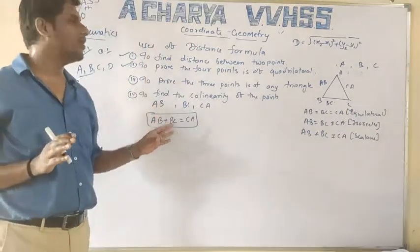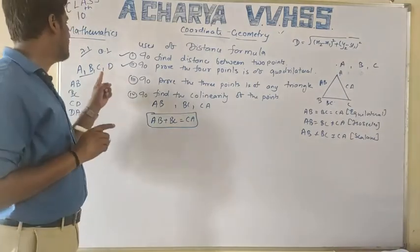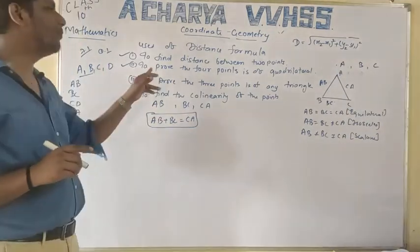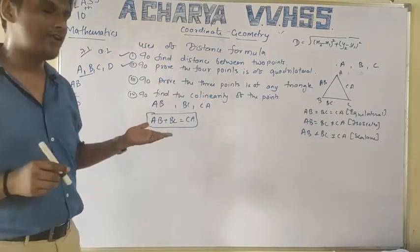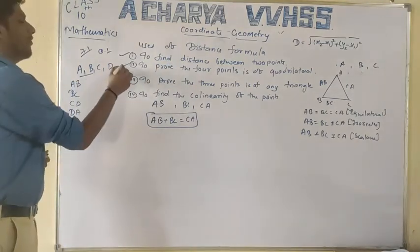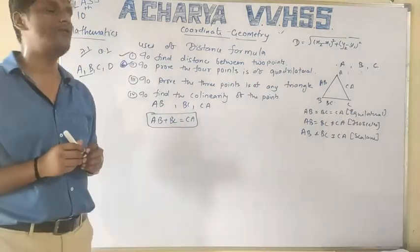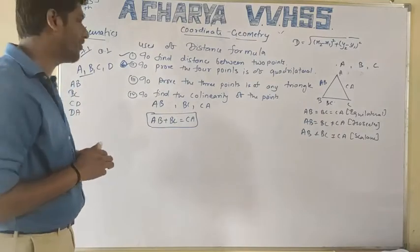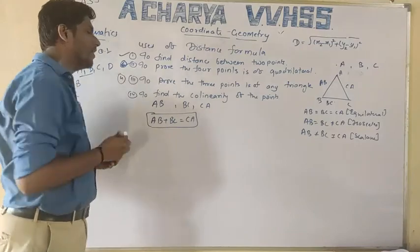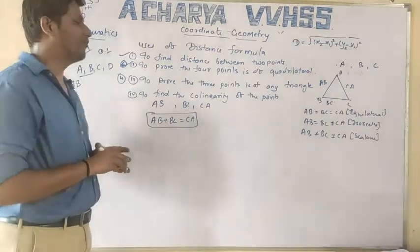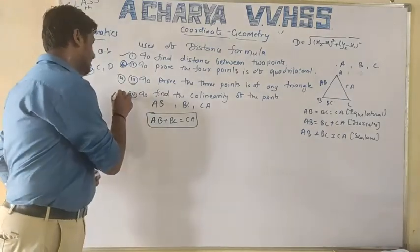So what are the uses of the distance formula? First, distance between two points — Exercise 7.1 Question 1. Second, to prove that four points form a quadrilateral and which type — Exercise 7.1 Question 6. Third, to prove that three points form a triangle and which type — Question 4 of the exercise. And fourth, to find the collinearity of points — Question number 3.